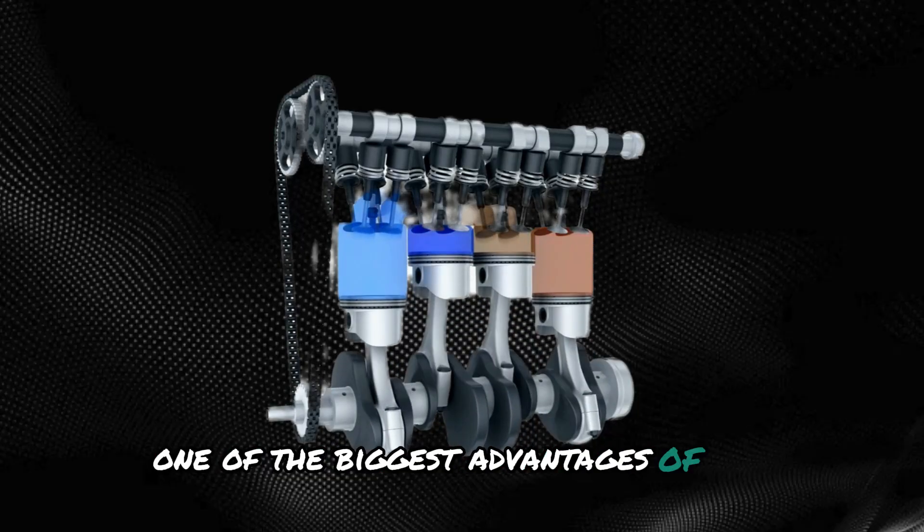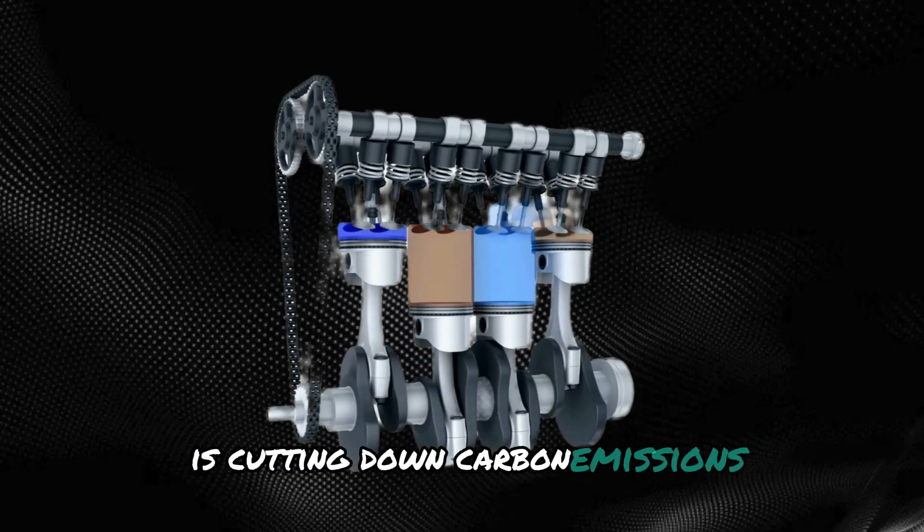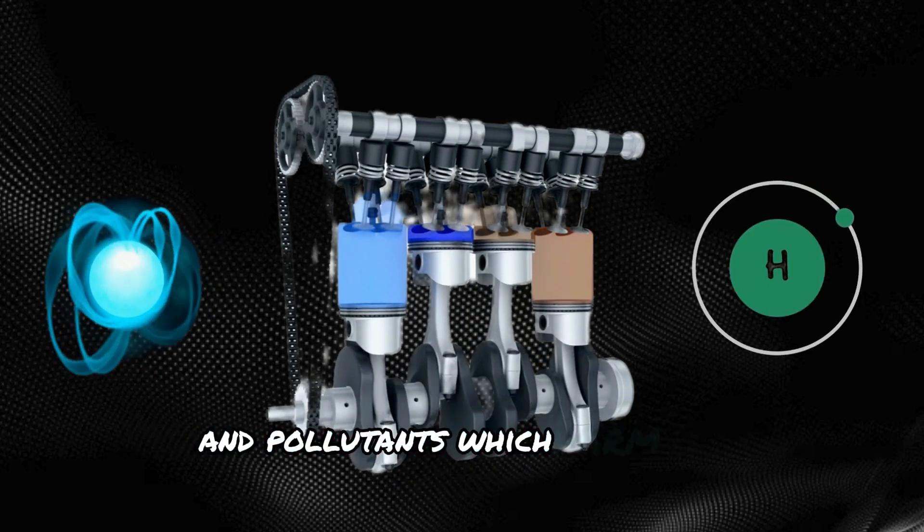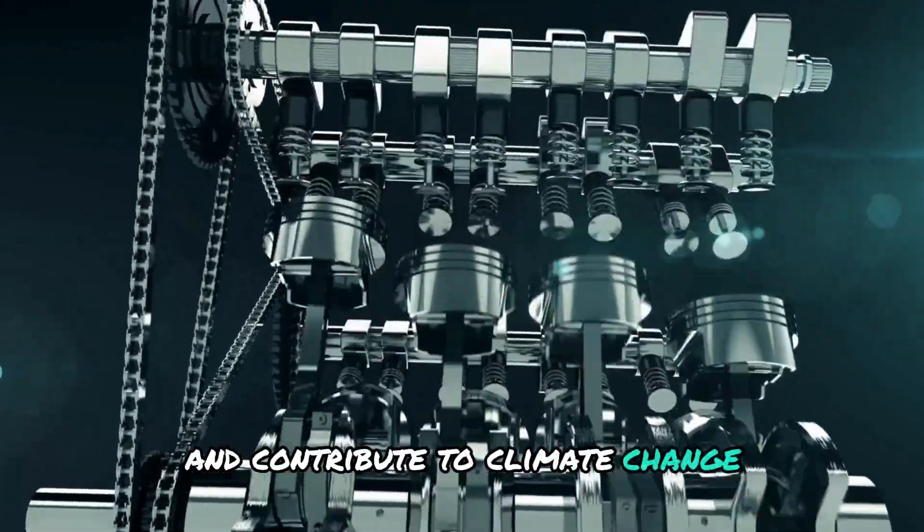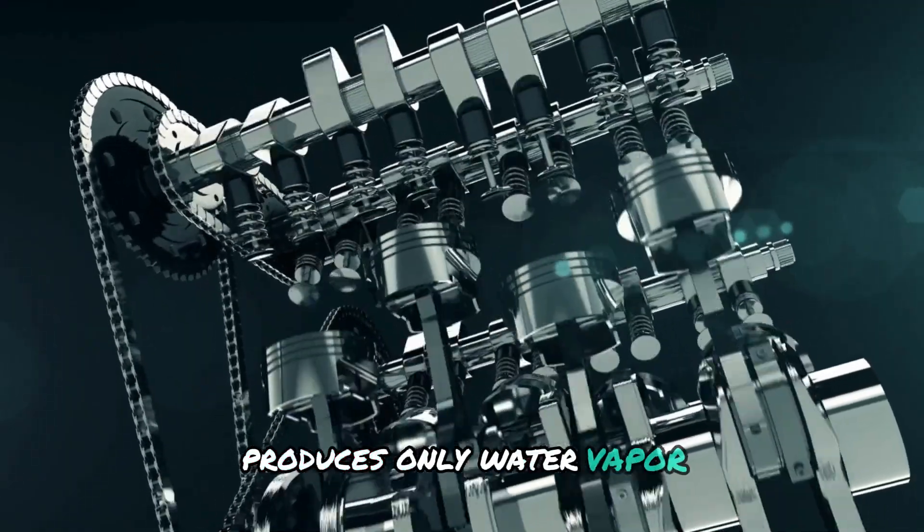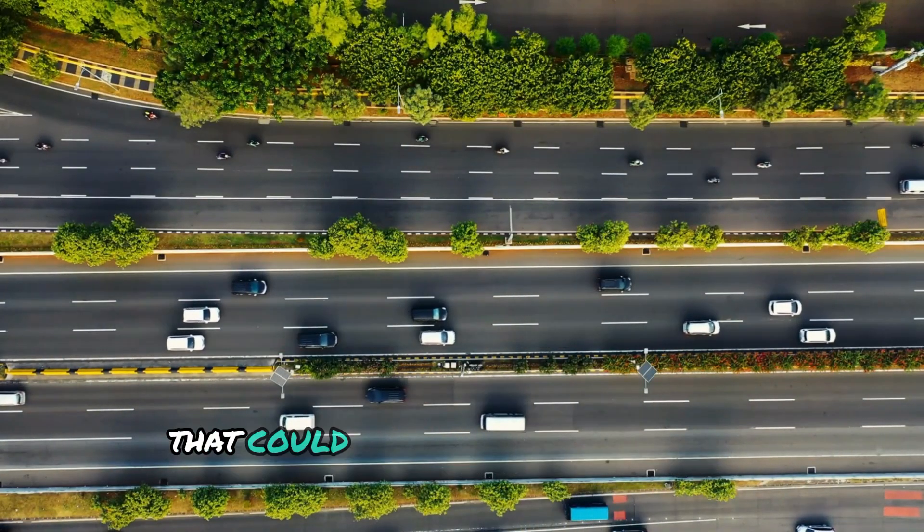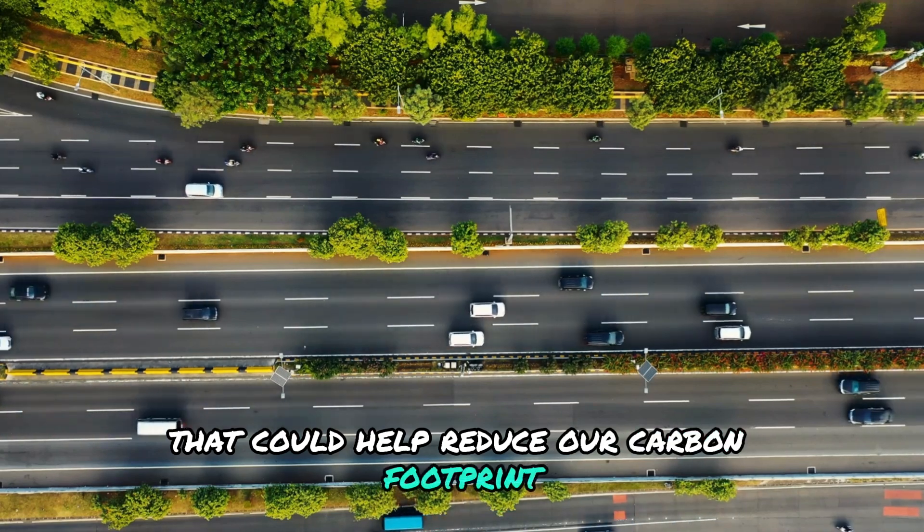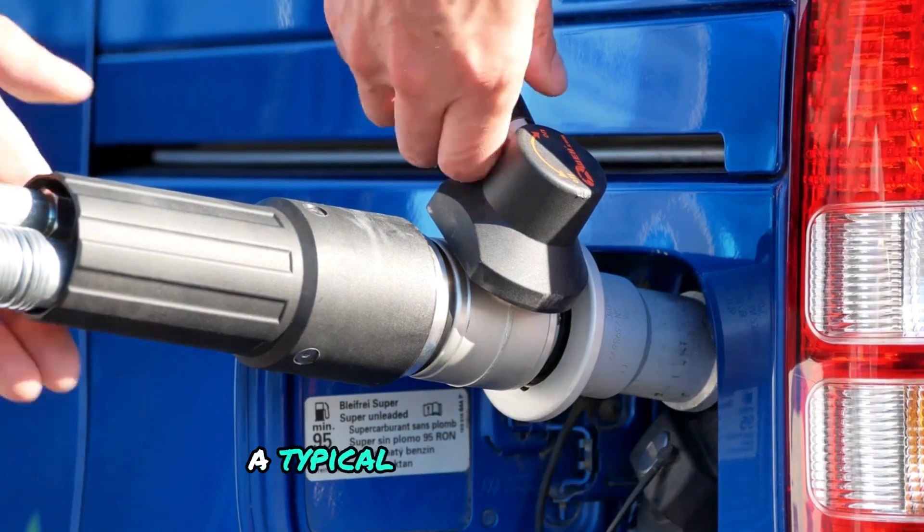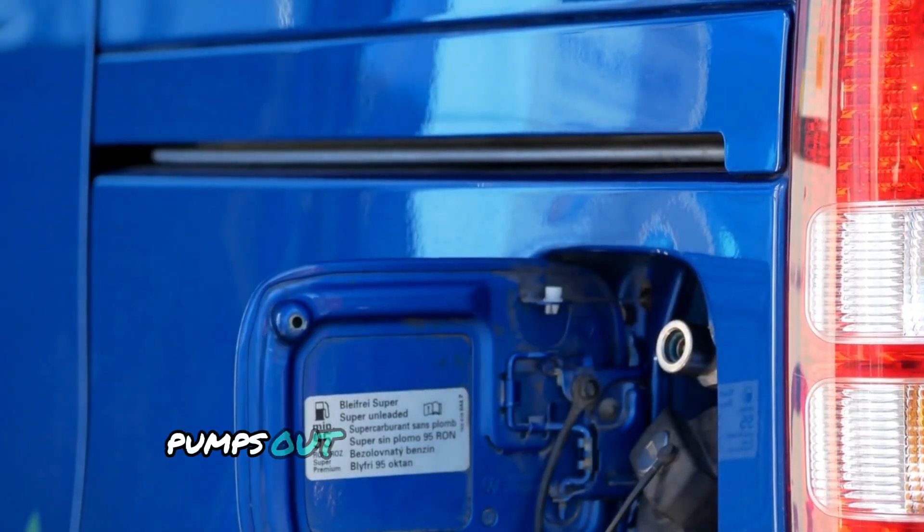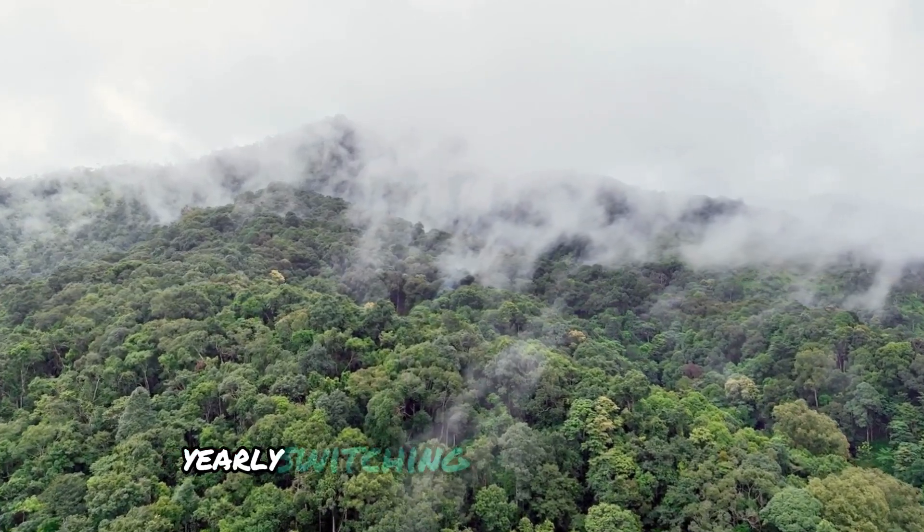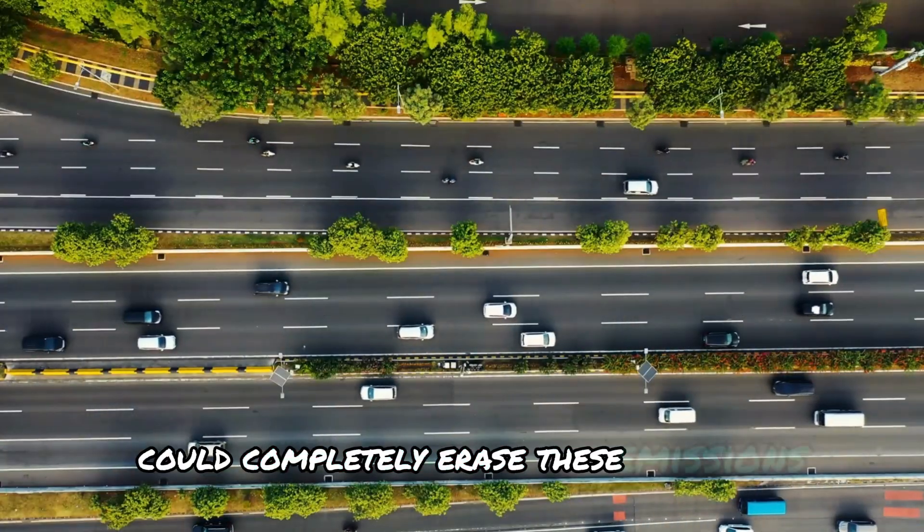One of the biggest advantages of this is cutting down carbon emissions. Regular engines release a lot of carbon dioxide and pollutants, which harm the environment and contribute to climate change. The water engine, on the other hand, produces only water vapor. It's a clean, sustainable option that could help reduce our carbon footprint and lead us towards a greener future. To put it into perspective, a typical gas-powered car pumps out about 4.6 metric tonnes of carbon dioxide yearly. Switching to water engines could completely erase these emissions.